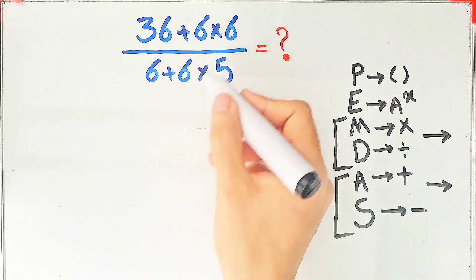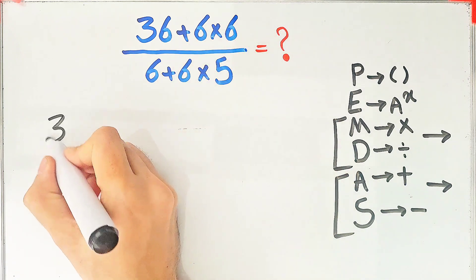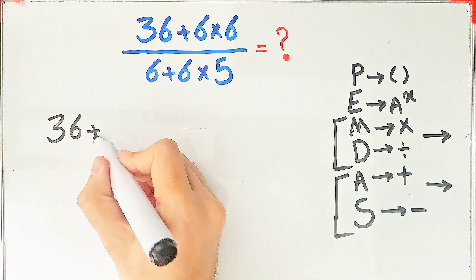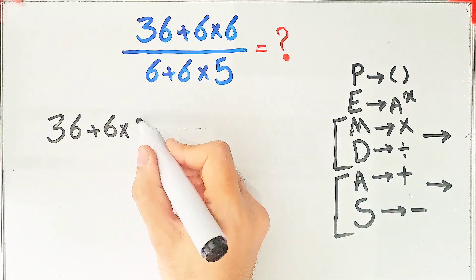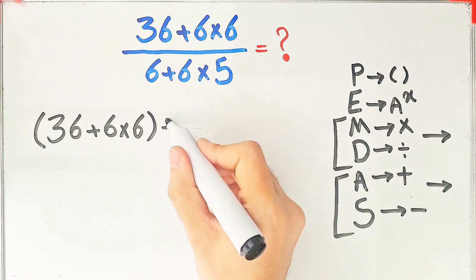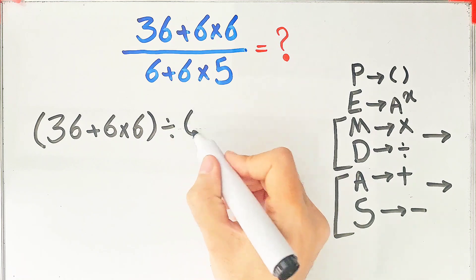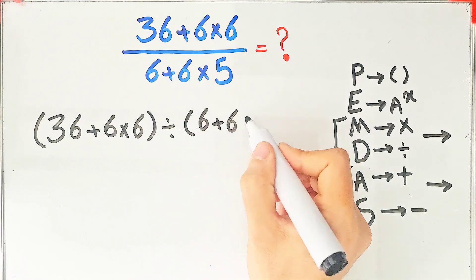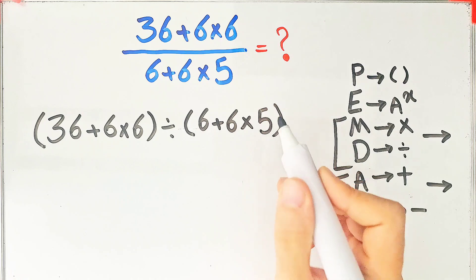In this question, we have addition, multiplication, and division. First, we simplify the question. We have 36 plus 6 times 6 in the numerator, and in the denominator we have 6 plus 6 then times 5.